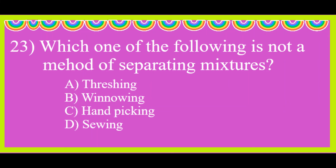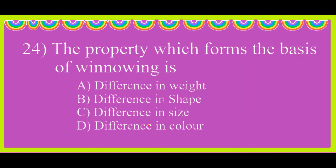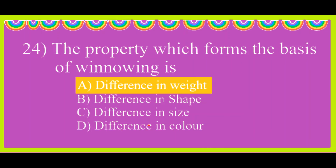Question 23: which one of the following is not a method of separating mixtures? Question 24: the property which forms the basis of winnowing is difference in weight.